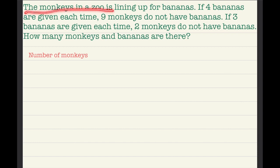The monkeys in a zoo is lining up for bananas. If four bananas are given each time, nine monkeys do not have bananas. If three bananas are given each time, two monkeys do not have bananas. How many monkeys and bananas are there?